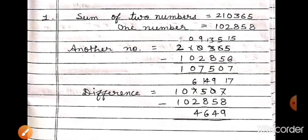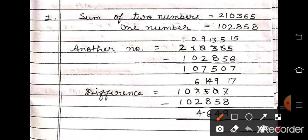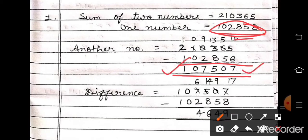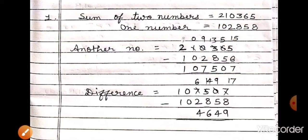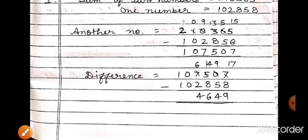First find the other number — this is the other number. The two numbers are given: this one and this one. The greater one — so this number will be subtracted from the greater one — the answer comes.